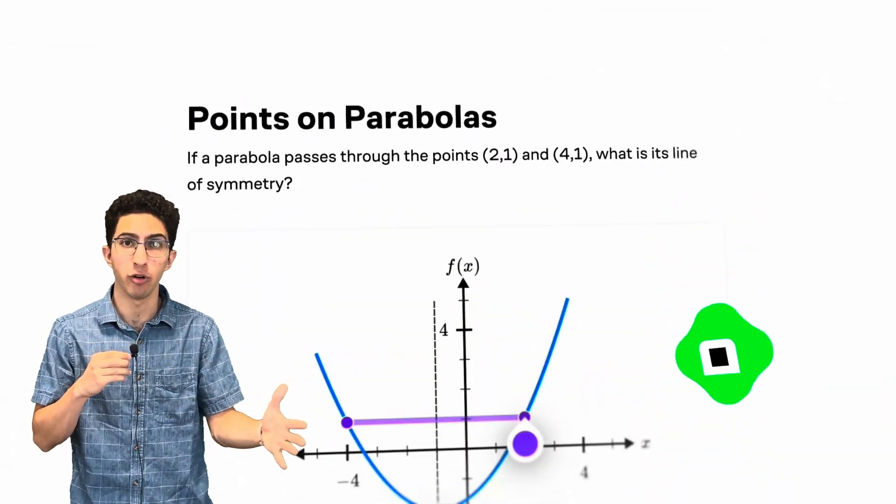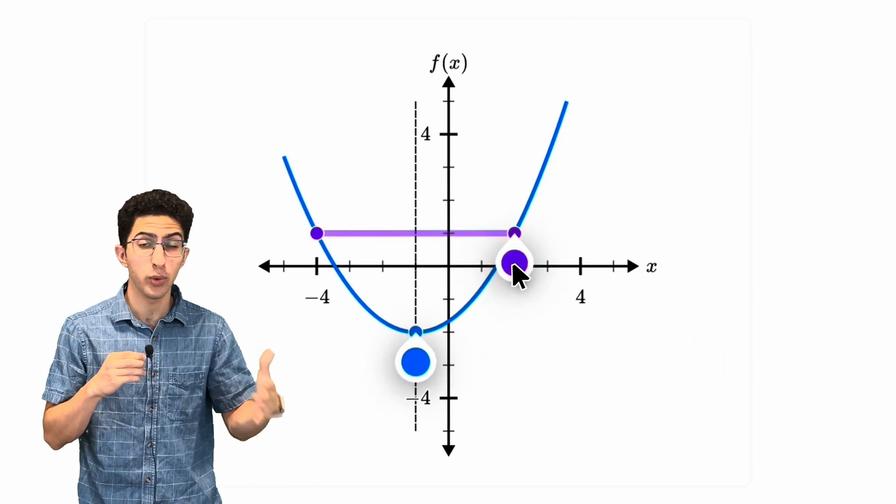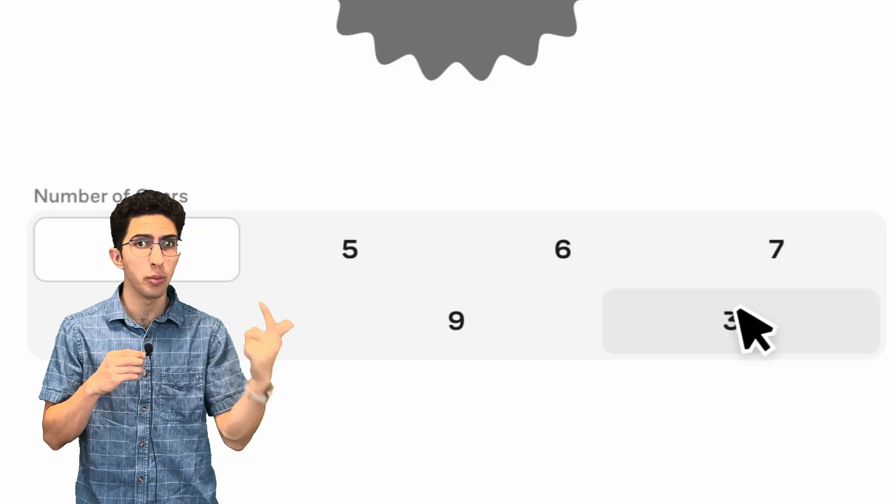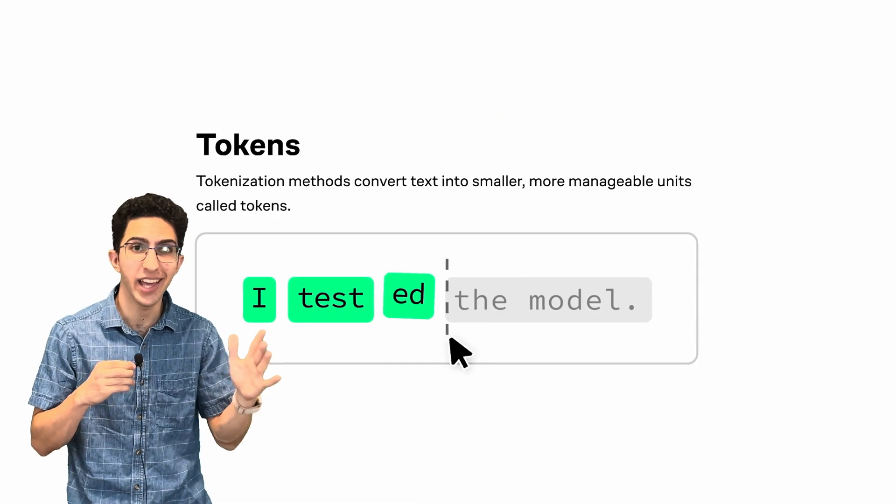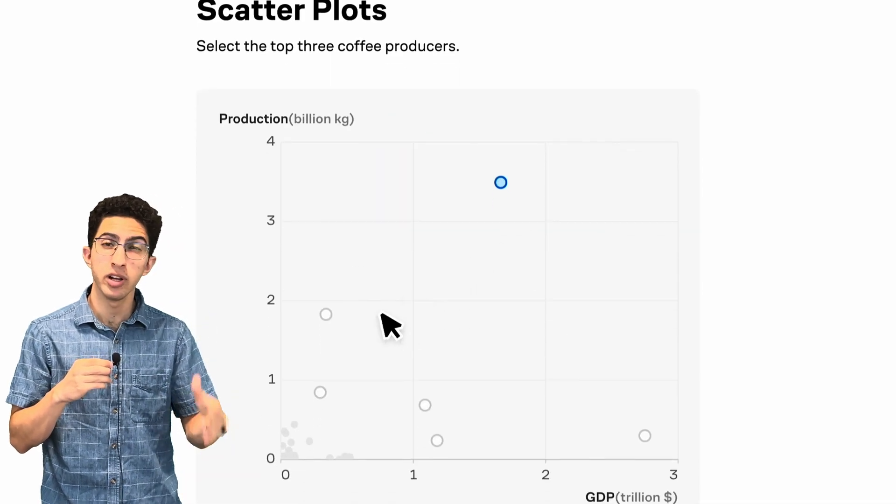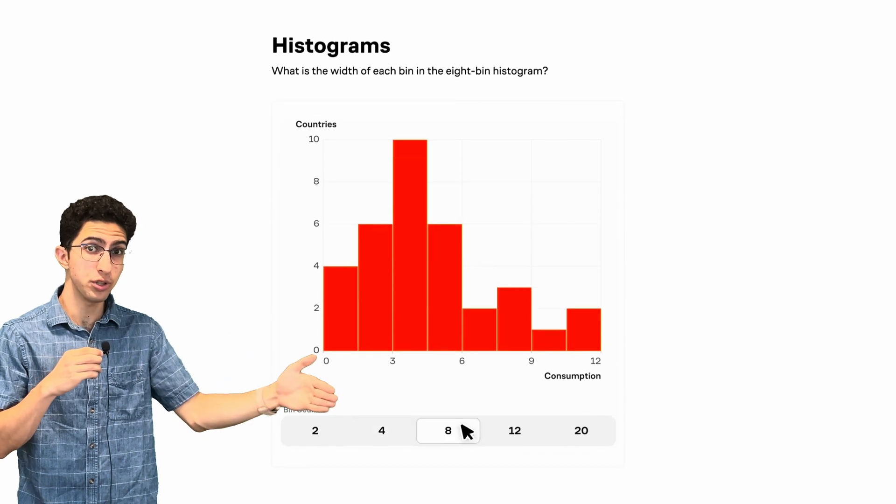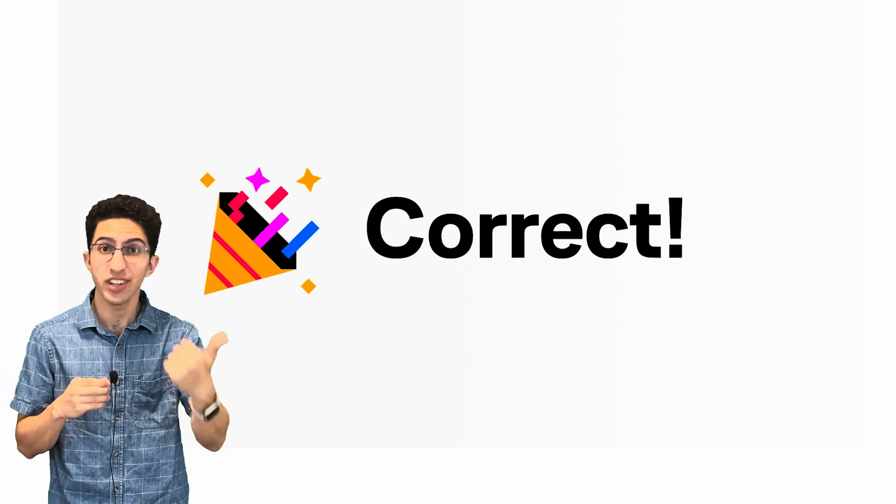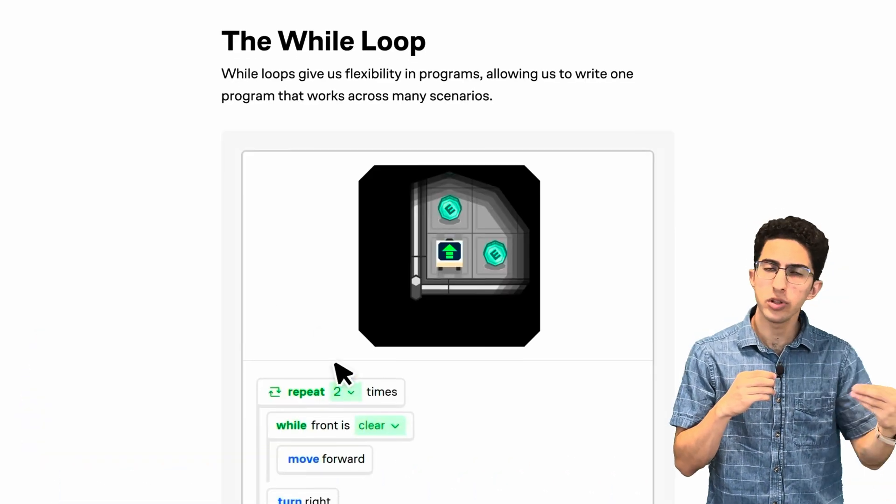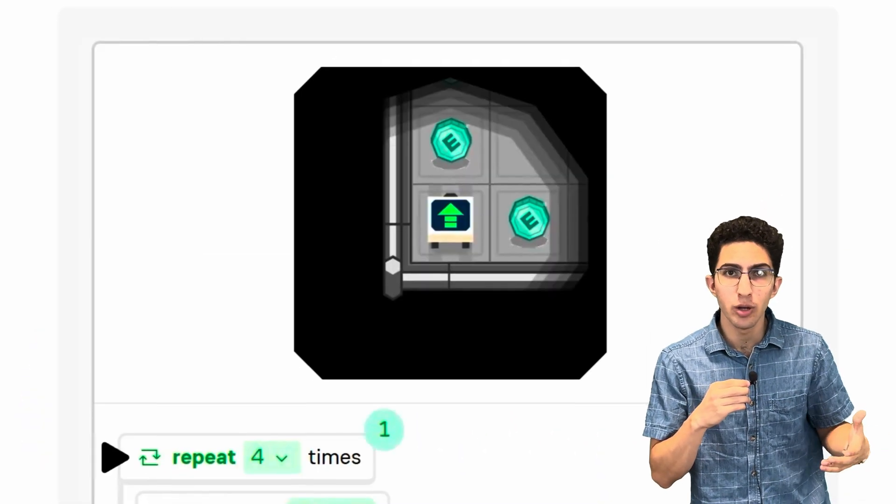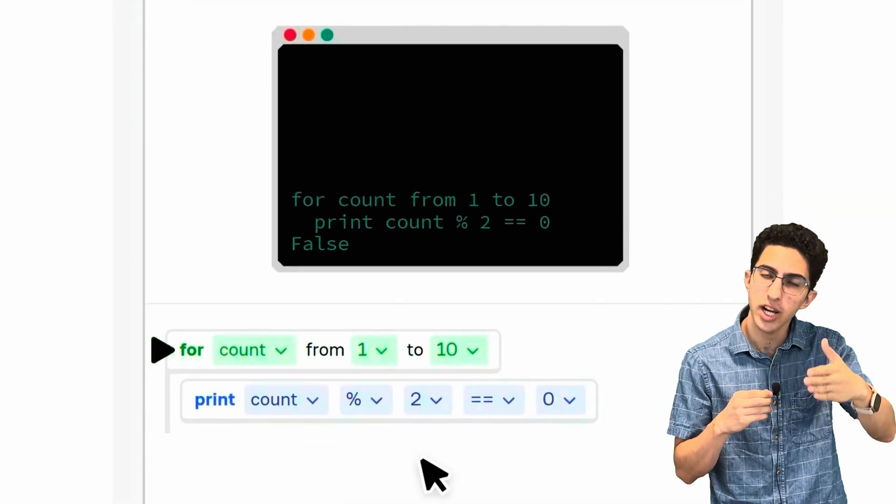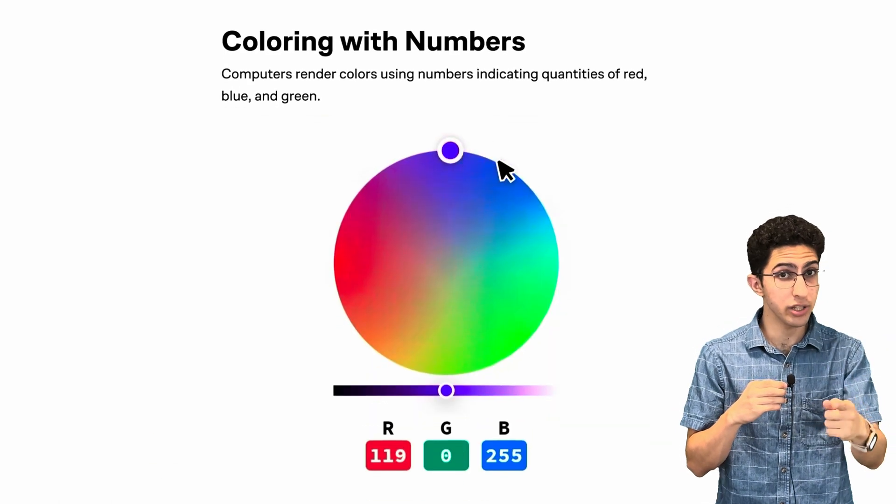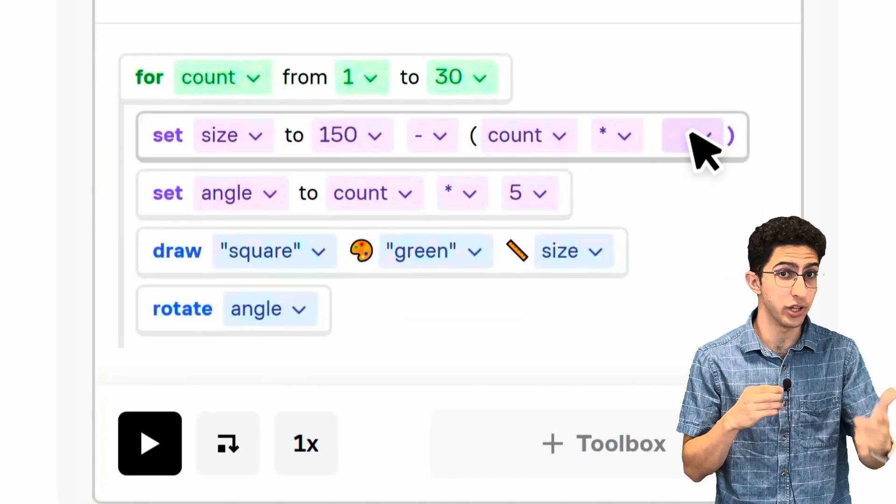Brilliant is an online platform where you learn by doing, with thousands of interactive lessons in math, data analysis, programming, and now even AI. Brilliant's uniquely designed platform combines first principles approaches with interactive lessons that make learning both effective and fun. While you're building knowledge on specific topics, Brilliant teaches you to think critically, tackle challenges, and break down complex ideas. All skills you'll use well outside of just academics.